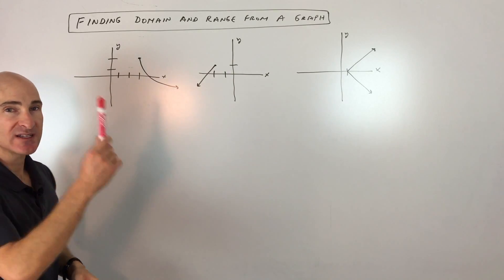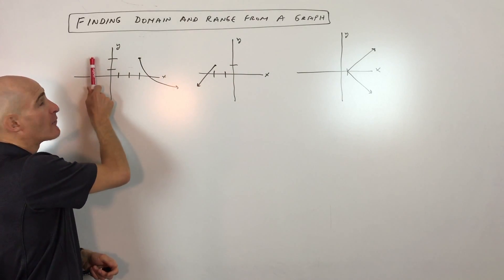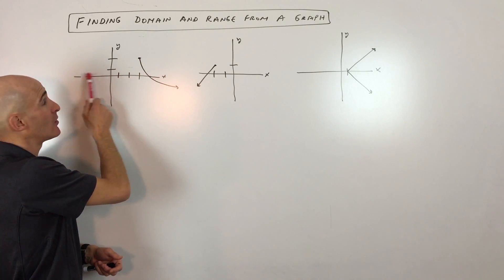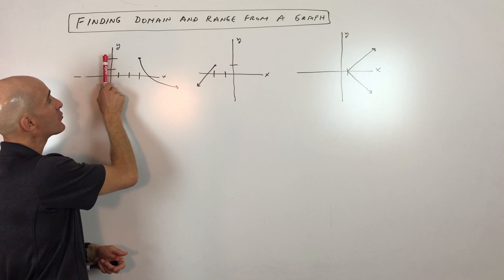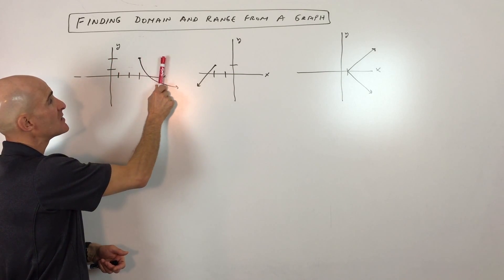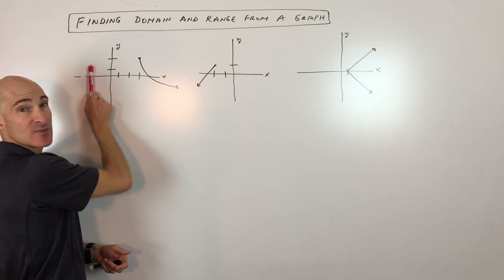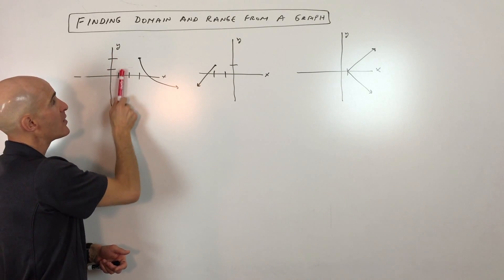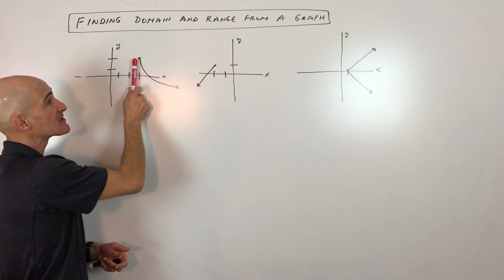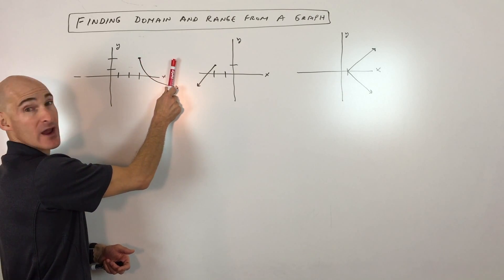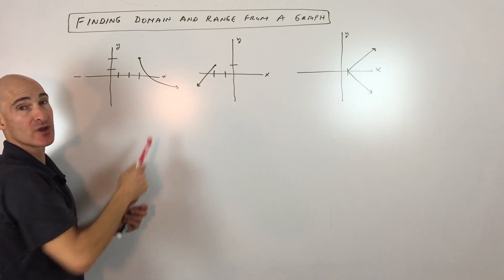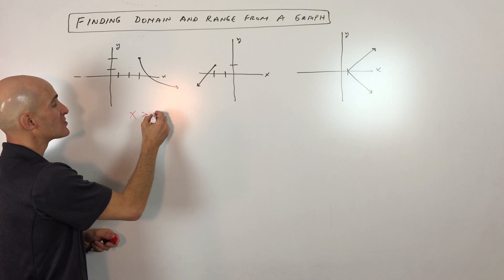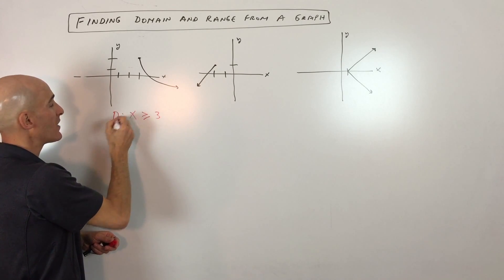For the domain, I take a vertical line and scan from left to right, because x controls the horizontal direction. When I'm on the left side, can x be negative? No — there are no points on the graph there. Can x be zero, one, or two? No. Can it be three? Yes. So x is greater than or equal to three — that's the domain.